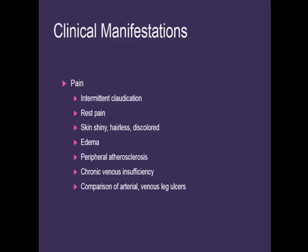Other signs and symptoms include decreased peripheral pulses, skin that is very shiny and hairless, and discoloration from breakdown of red blood cells. The skin can also become a very dark red called dependent rubor when they're in a dependent position. Their toenails become very thick, and complications include ulcers, gangrene leading to amputation, and increased susceptibility to infections which can lead to sepsis.